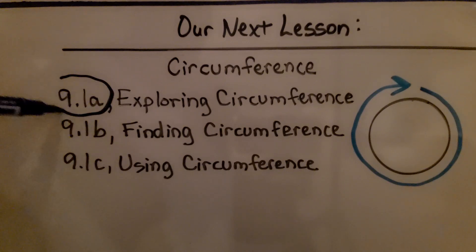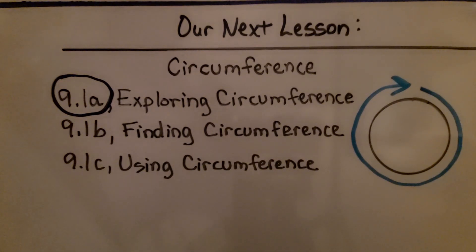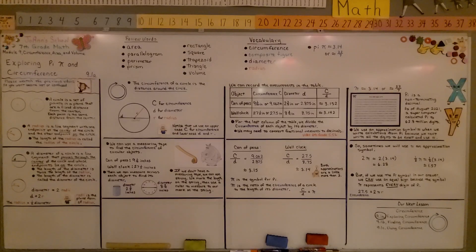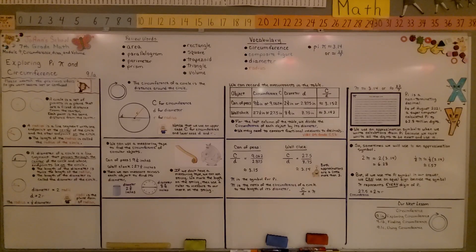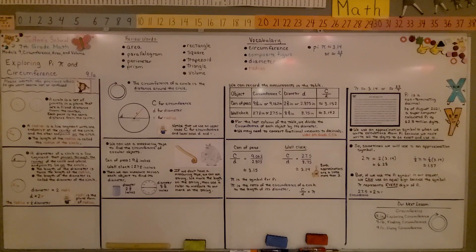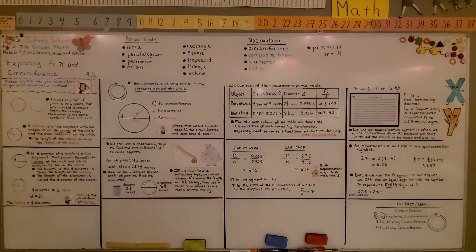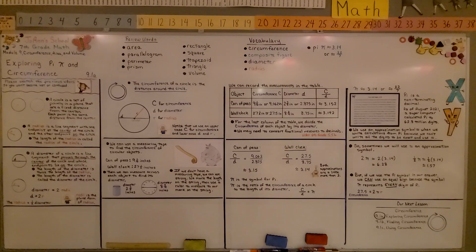We've finished 9.1a. We're going to move on to the second part, 9.1b — finding circumference. To find circumference, we need to use pi, which is why it was so important to explain it. I hope you're doing well, and I hope you join me for the second part of the lesson. Bye!